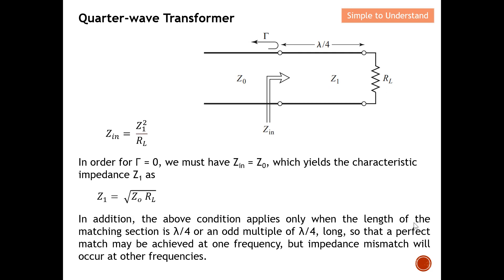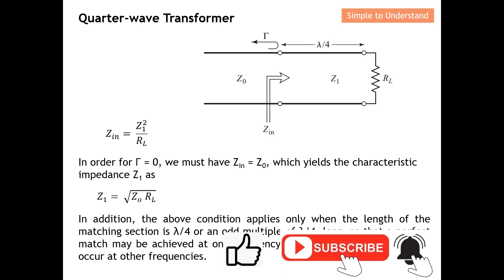This condition applies only when the matching section length is lambda over four, or an odd multiple of lambda over four, so that a perfect match is achieved at one frequency. However, impedance mismatch will occur at other frequencies. In short, this method can only perform impedance matching at one single desired frequency.